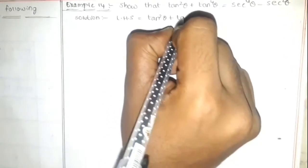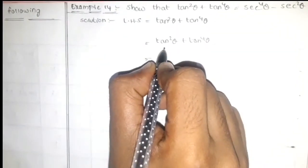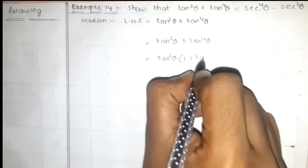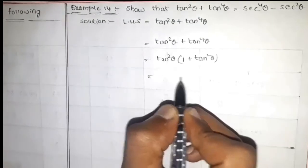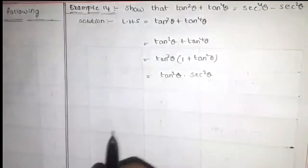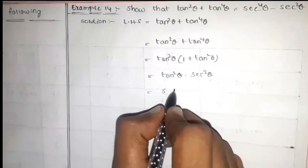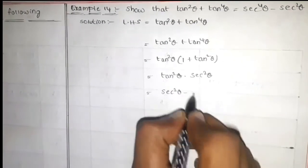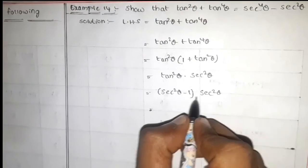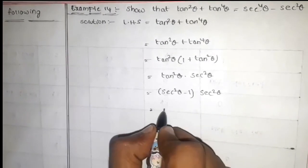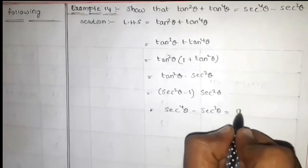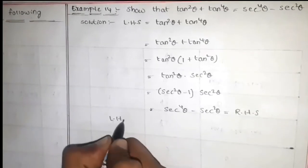Taking the LHS: tan² θ + tan⁴ θ. Taking tan² θ as common, we get tan² θ (1 + tan² θ). Since 1 + tan² θ = sec² θ, this becomes tan² θ · sec² θ. Writing tan² θ as (sec² θ - 1), we get (sec² θ - 1) · sec² θ = sec⁴ θ - sec² θ, which equals the RHS. Hence proved.